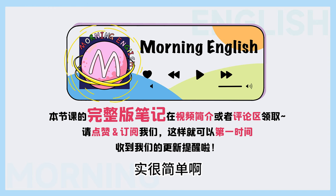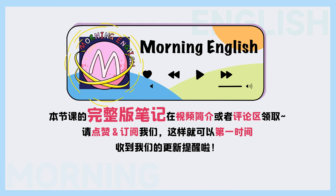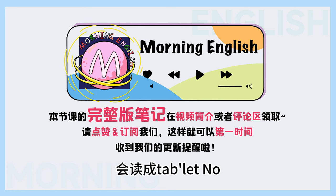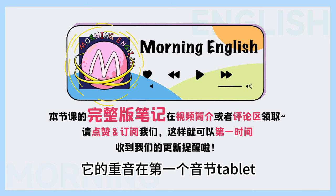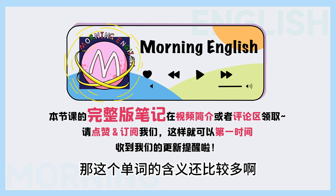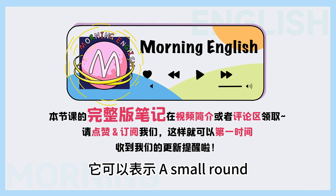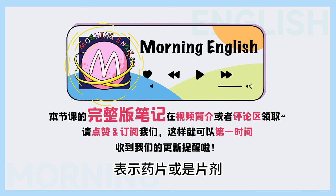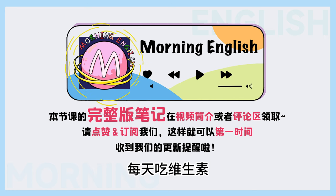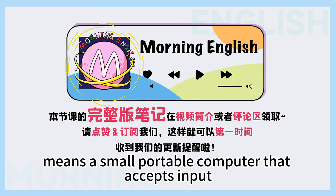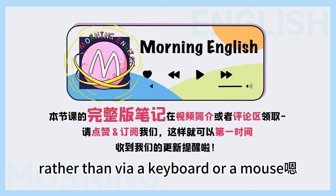首先是平板电脑，其实很简单啊，一个词就可以表达：tablet。首先我们来看一下它的发音，很多同学呢会读成tablet，它的重音在第一个音节，字母e在这里发一个schwa的音，tablet。那这个单词的含义还比较多啊，首先呢它可以表示 a small round solid piece of medicine that you swallow，表示药片或是片剂。比如我每天都吃维生素，那种维生素片啊，英文名就是vitamin tablet.